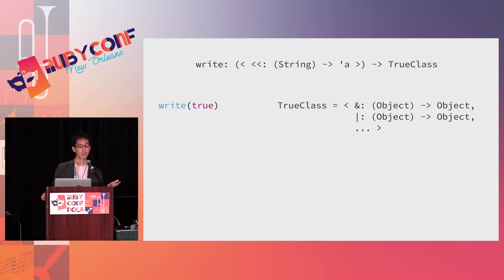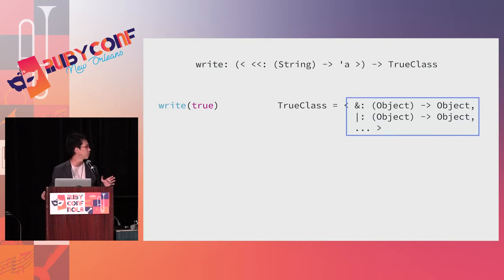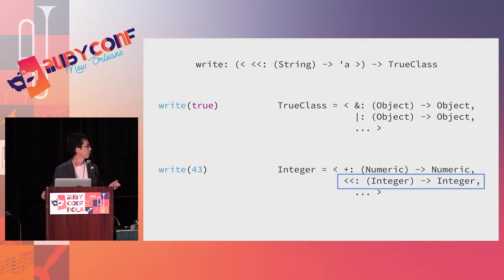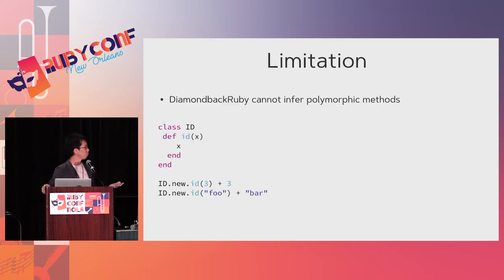How about passing an integer? Integer has a left-shift operator, but its argument is an integer, so you cannot pass a string to it — that is also a type error. This is an easy explanation of structural subtyping. DiamondbackRuby is based on structural subtyping and can infer some types of Ruby programs, but there is a big limitation: it cannot infer polymorphic methods.